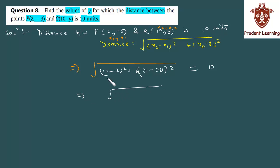Which implies that under root of 10 minus 2 is 8, and 8 squared is 64, plus minus of minus becomes plus, so y plus 3 whole square equals 10. Now, squaring both sides,